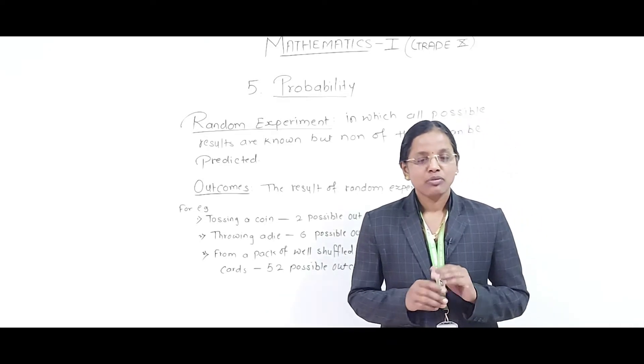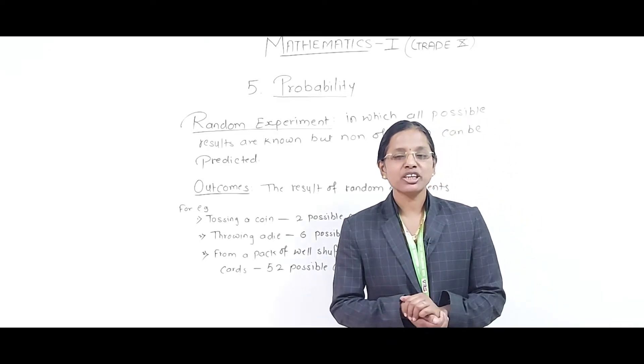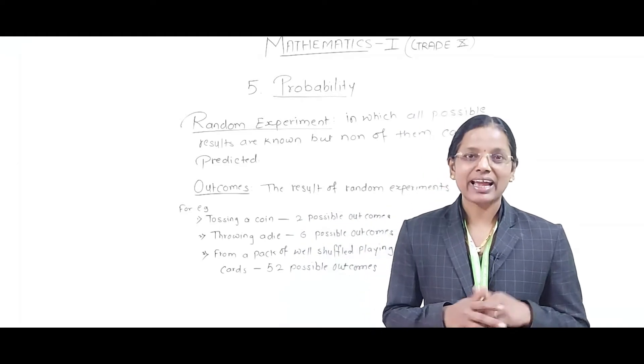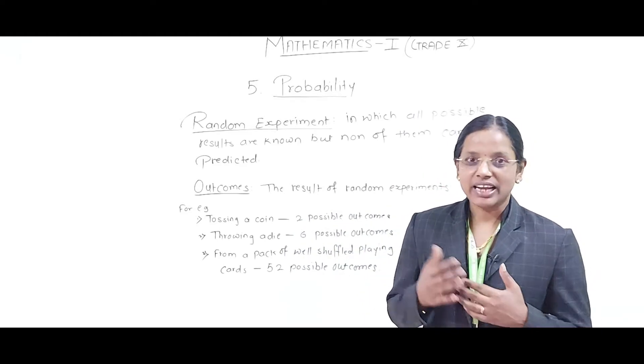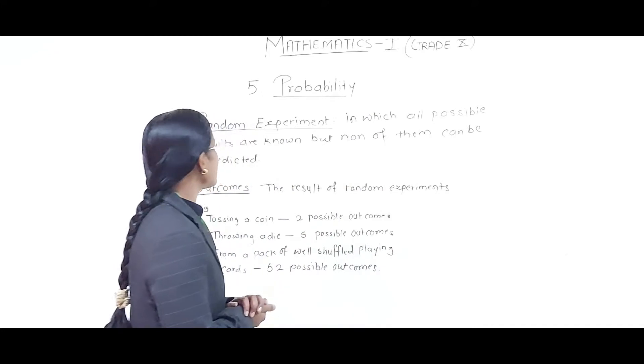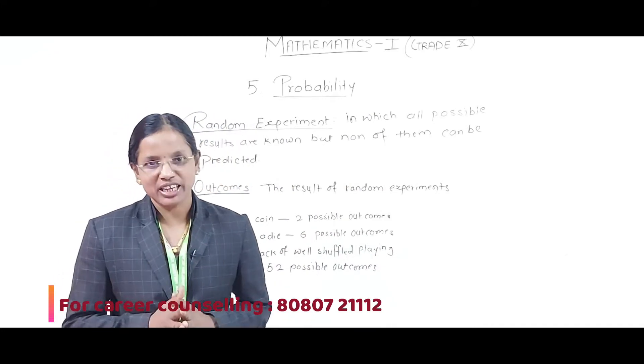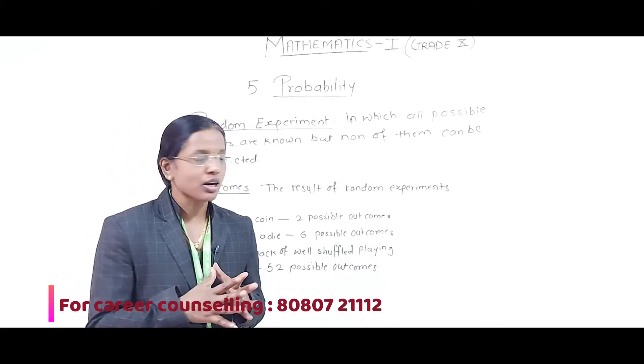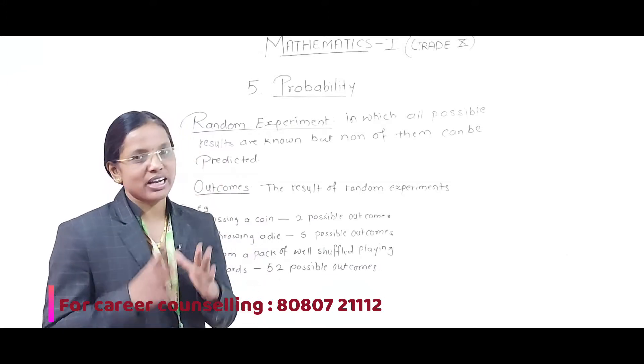For studying probability, we must know what is a random experiment and what are outcomes. Random experiments are those in which all possible results are known, but none of them can be predicted. Outcomes means the result of random experiments.